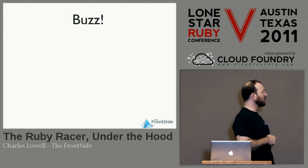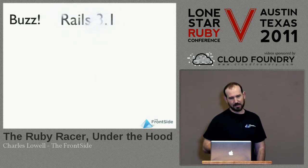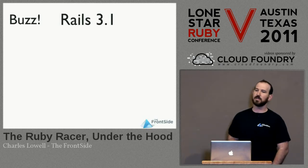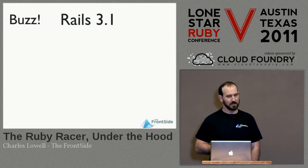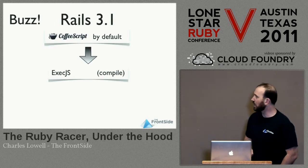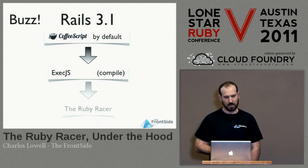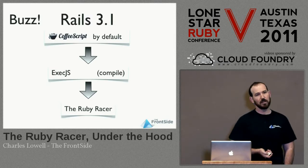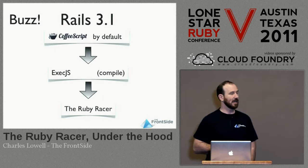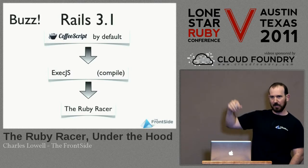But why might you want to do this? One reason, obviously, is the new hotness: Rails 3.1. Big controversy — it comes with CoffeeScript enabled by default. CoffeeScript is implemented in JavaScript, so it uses a gem called exec.js to compile your CoffeeScript into JavaScript. And if you have it installed, the default runtime actually is the Ruby Racer. So you may be using it only by accident, but not directly — with several layers in between you.